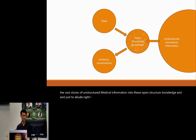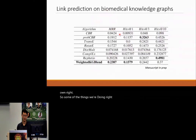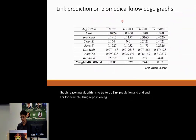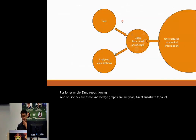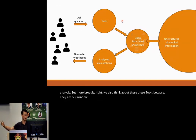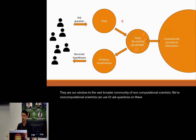A lot of work in our field involves thinking about how to convert the vast stores of unstructured biomedical information into open structured knowledge. These knowledge bases have value in their own right — we're looking at graph reasoning algorithms to do link prediction for drug repositioning. More broadly, these tools are our window to the vast community of non-computational scientists, who can ask questions on these tools and use those results to generate hypotheses.